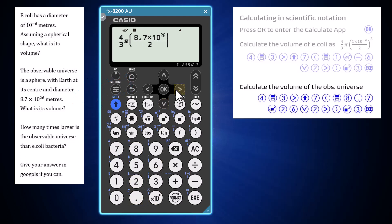Alternatively, I could have arrowed backwards and edited the previous command to save some button pushing. Once again the answer is given in scientific notation, this time because the answer is so large. With these values calculated, it is time to find out how many times larger the observable universe is than E. coli bacteria.